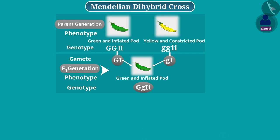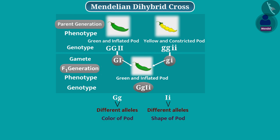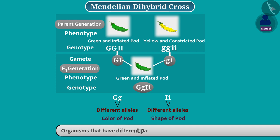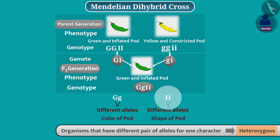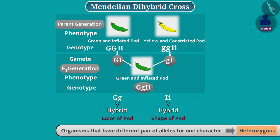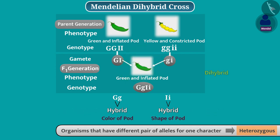In these plants, there are two different alleles for pod color and pod shape. Organisms that have a different pair of alleles for one character are called heterozygous — this is also called hybrid. Plants of F1 generation are heterozygous for two characters, therefore these are called dihybrid.